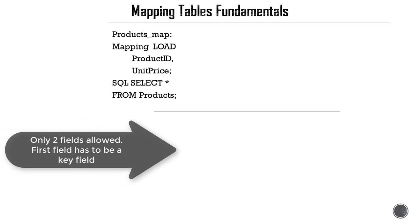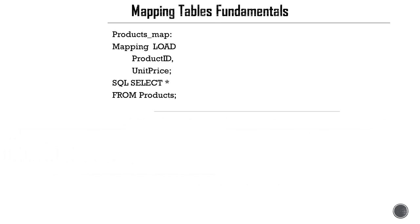The first step is always to create a mapping load. As you see, the mapping load has the mapping prefix to the load statement. The first field is always a key field - in this case, it's ProductID - and the second field is an attribute or value field, which is UnitPrice. The SQL syntax is similar to a regular load statement.